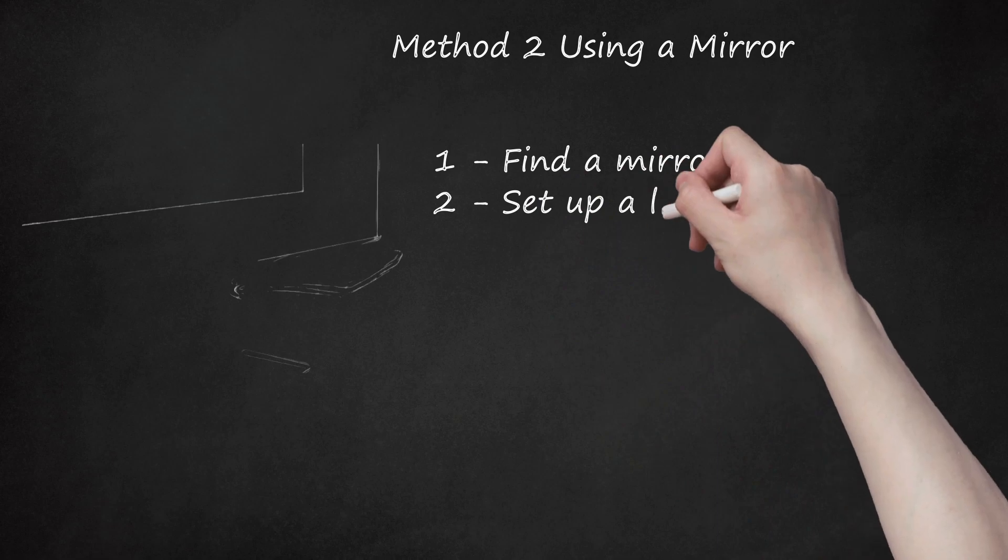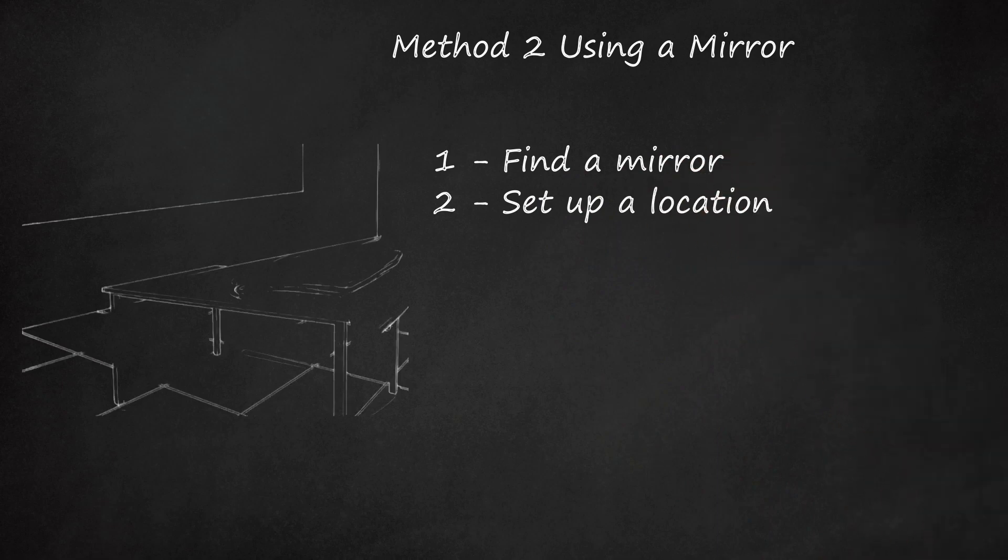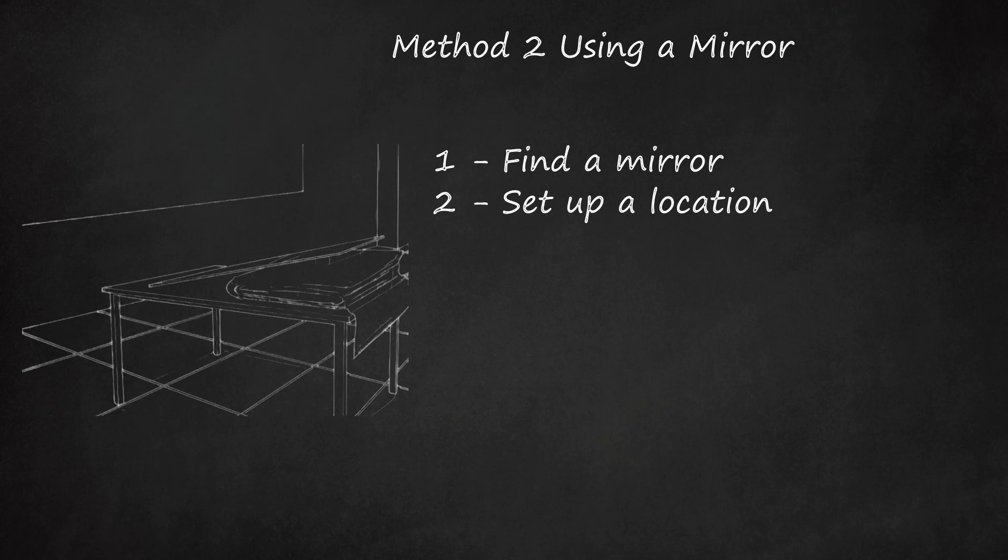Step 2 - Set Up a Location. There are different approaches of using a mirror to disappear. For this technique you'll need a table, blanket, and your mirror. This trick will rely on lighting and positioning of the mirror. It won't be perfect on your first attempt.